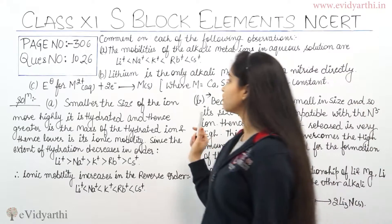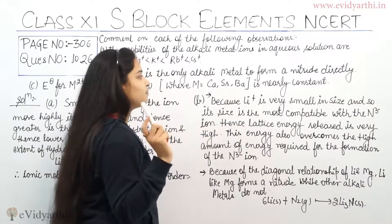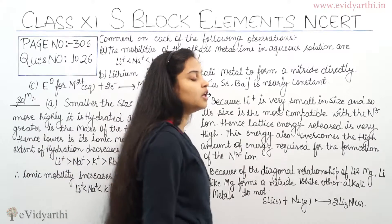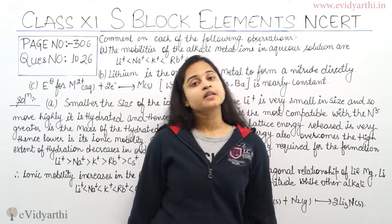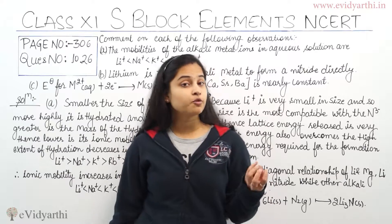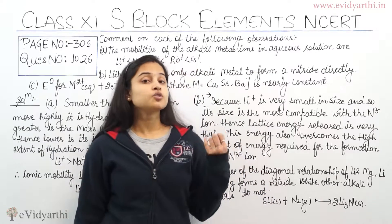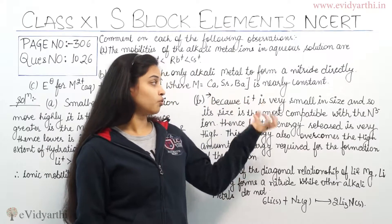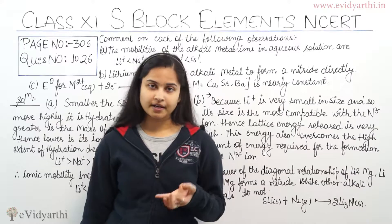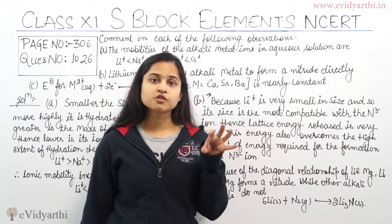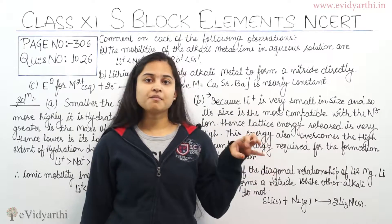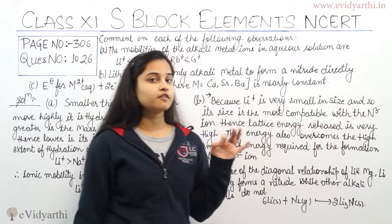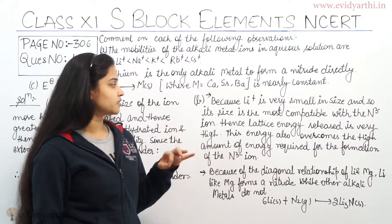Now coming to the second part of the question: lithium is the only alkali metal to form a nitride directly. Lithium has a very small size, and its size is compatible with the size of the nitride ion (N³⁻). Because lithium ion has a small size compatible with the nitride ion, lithium forms nitrides directly.